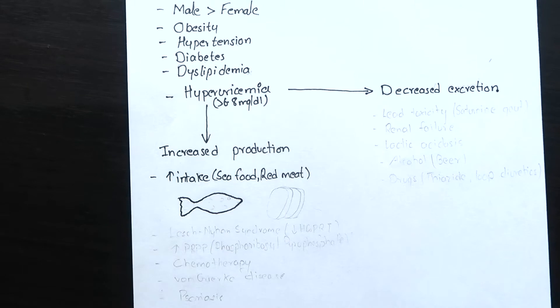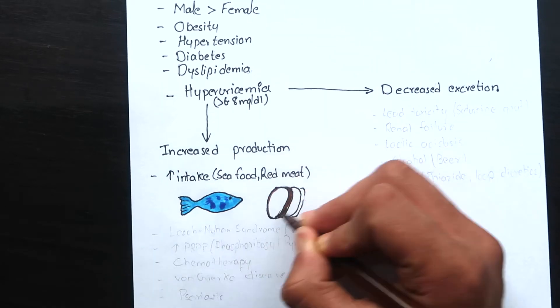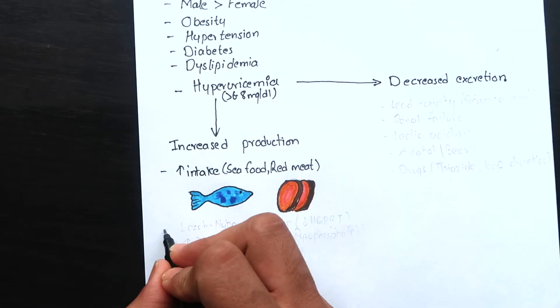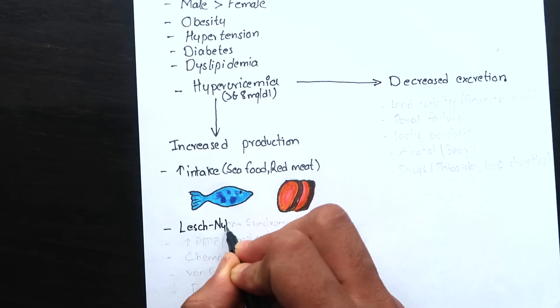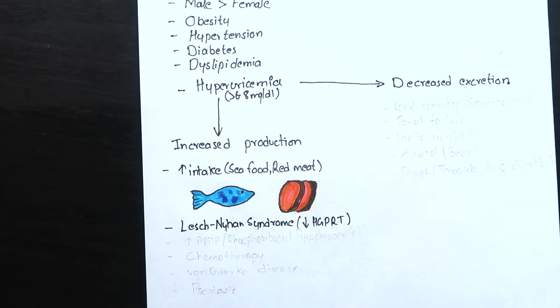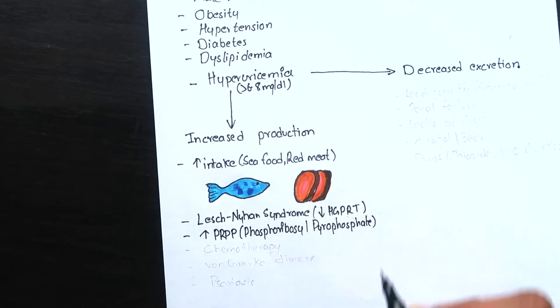Under increased production we have massive intake of seafood and red meat, Lesch-Nyhan syndrome where there is deficiency of hypoxanthine guanine phosphoribosyl transferase enzyme, excess phosphoribosyl pyrophosphate, cell lysis due to chemotherapy, von Gierke disease and psoriasis.